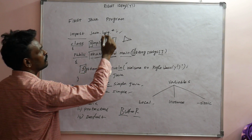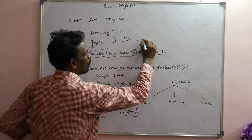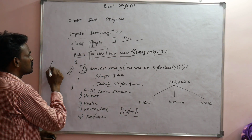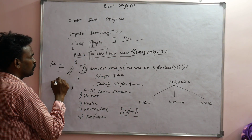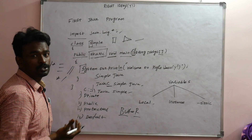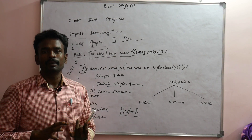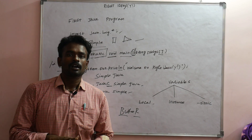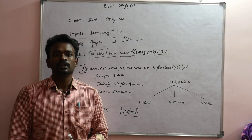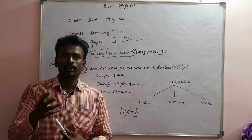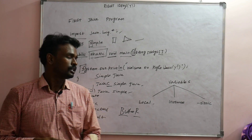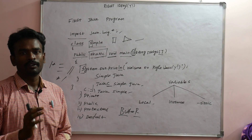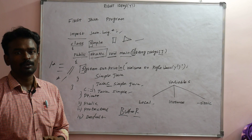This is a simple Java program. If you want to use Java documentation, there is a single-line comment, a multi-line comment, and Javadoc comments with tags such as @author, @param, @return, @exception, and @version for user descriptions. We will see the next program in the following session. Thank you.